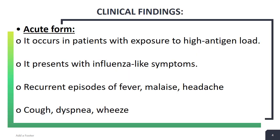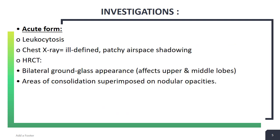The acute form occurs in patients with exposure to a high antigen load. It presents with influenza-like symptoms including recurrent episodes of fever, malaise, headache, cough, dyspnea, and wheeze. Complete blood count will show leukocytosis, that is increased white blood cell count.